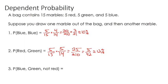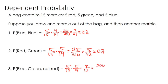Now we have three events: drawing a blue, then a green, then any marble that's not red. The probability of drawing blue is 5/15. For the second draw there are only 14 marbles left, but still 5 green, so 5/14. For the third event, assuming the first two draws were successes, there are only 13 marbles left. How many non-red marbles remain? You drew one blue and one green, so 8 marbles are not red out of 13 total. Multiply straight across: 5/15 × 5/14 × 8/13 = 200/2730, which simplifies to 20/273 — roughly 7%.